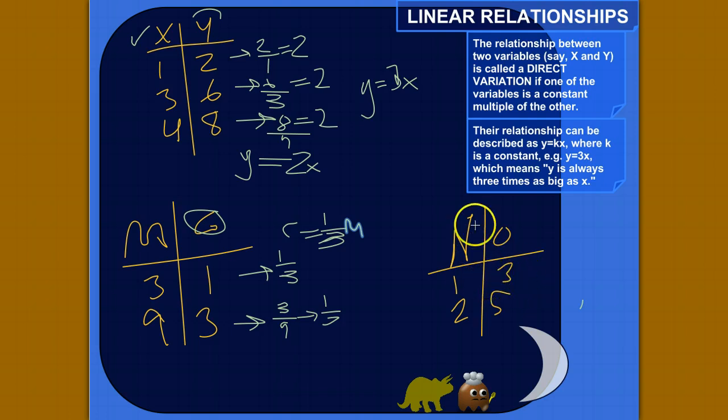Here's an example where there isn't one, where one variable is not a constant multiple of the other. So if we have 3 divided by 1, that is equal to 3. 5 divided by 2 is not equal to 3. That's a different number. So O is not a constant multiple of n. It changes.